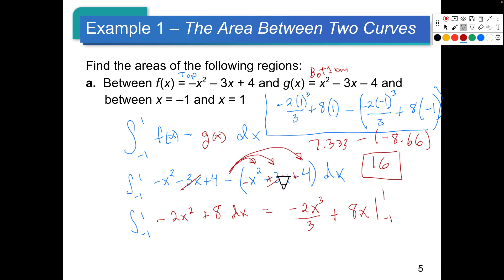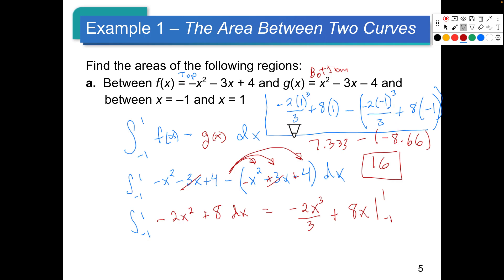Let me look more carefully to find the error. Negative, negative became positive, positive — that's correct. Negative 3, negative 3, positive 4 gives positive 8. For the second part with negative 1: negative 1 cubed is negative 1, which makes it positive 2 thirds minus 8. That should be negative 7.333. Negative and negative make it positive: adding these two together gives us 14.667.